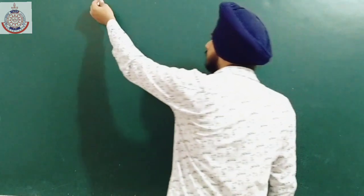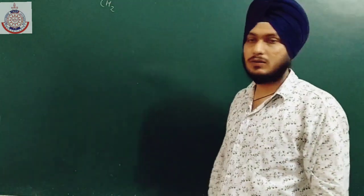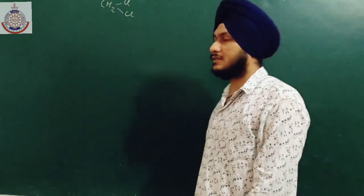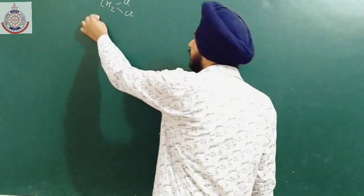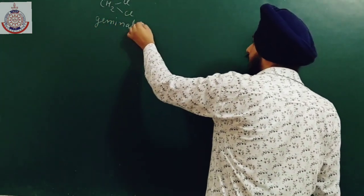We have already classified Haloalkanes on the basis of number of halogen atoms attached. Now, if two halogen atoms are attached to the same carbon atom, this constitutes a new class of compounds known as geminal dichlorides.